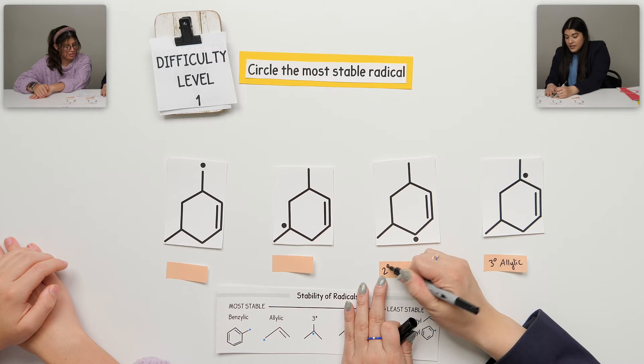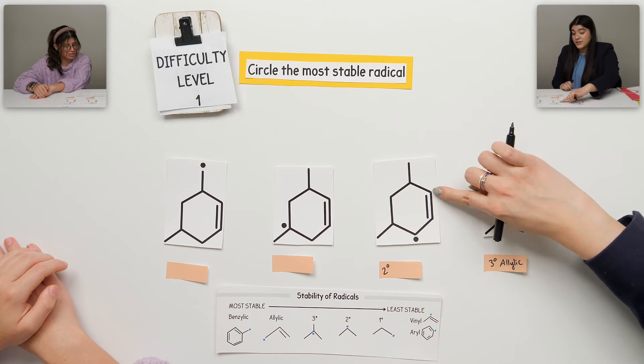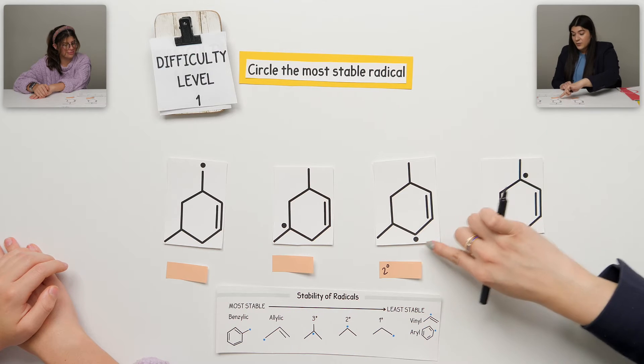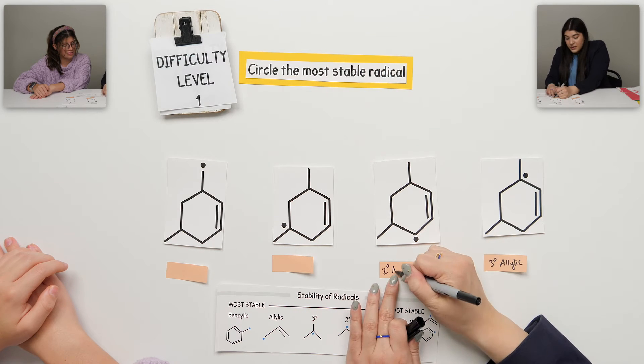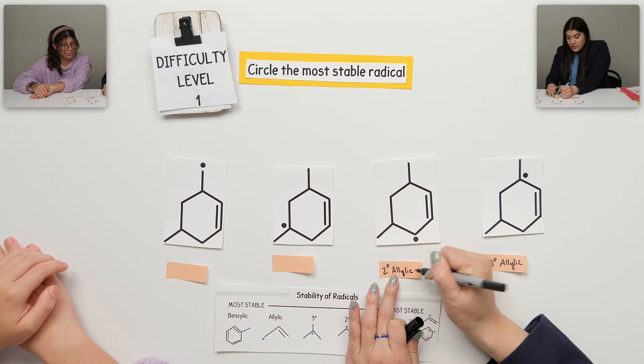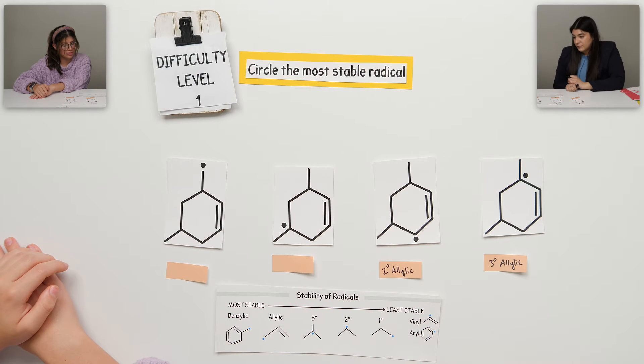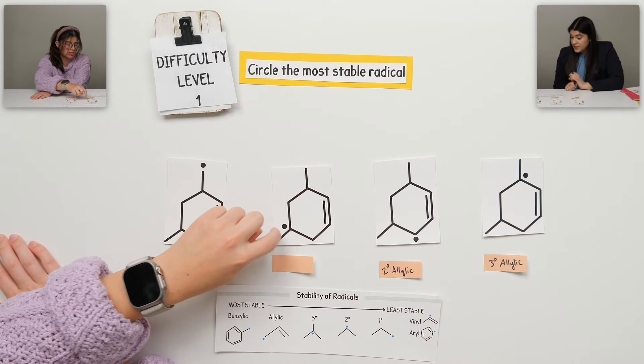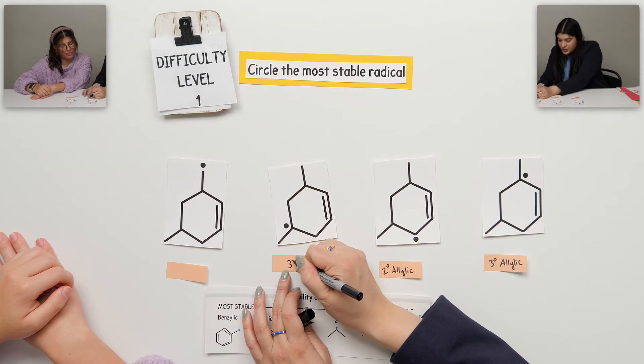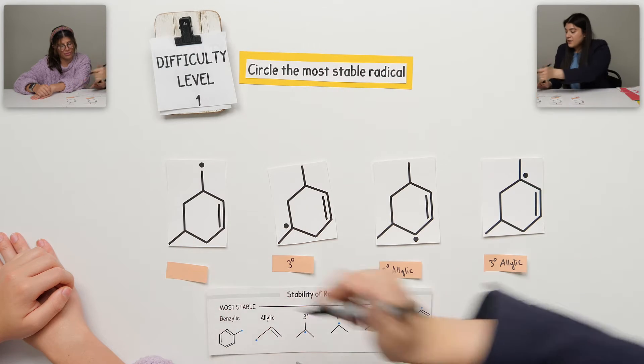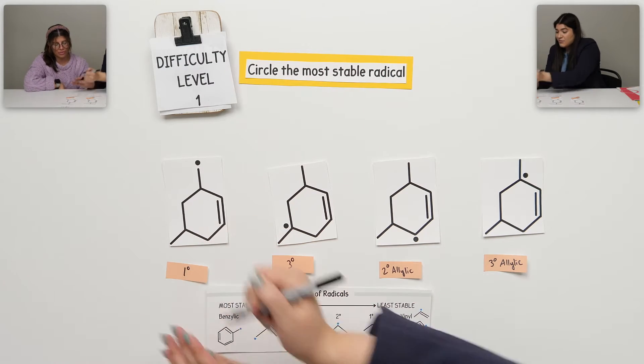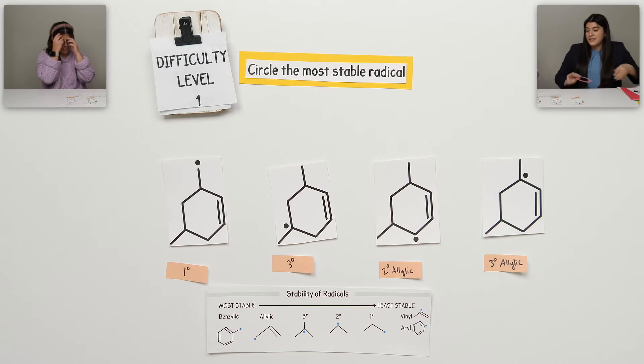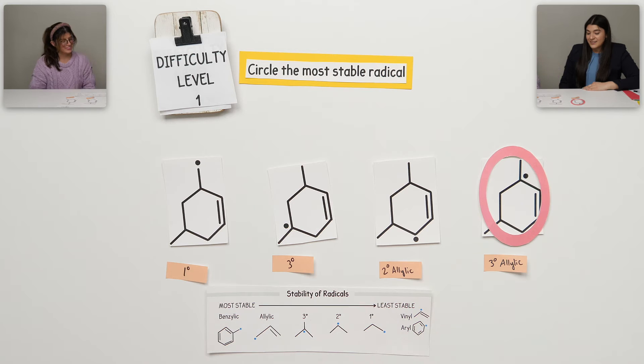And then, what would this be defined as? That would be secondary. And you also mentioned it's allylic, because there's one, two, and three. How would we classify this one? This one would just be tertiary. And this would be primary. I know that's the worst. We already said that, if you want to do the honors of circling the right one.